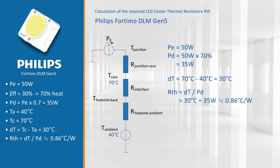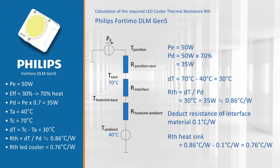Careful — from this value you still have to deduct the thermal resistance of the interface material. If you use a good interface material, that's about 0.1. So we are looking here for an LED cooler where the thermal resistance of the cooler is below or equal to 0.76 degrees Celsius per watt.